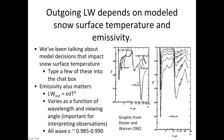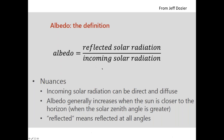Differences in emissivity result in roughly half a degree or less difference in surface temperature. However, aggregated over time — if one model uses emissivity 0.98, another 0.99, and another 1.0 — you accumulate bias over the entire snowmelt season. Even though it's very small any given day, it adds up as a consistent bias.